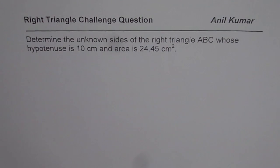Determine the unknown sides of the right triangle ABC whose hypotenuse is 10 cm and area is 24.45 cm². First of all, let me thank my subscriber for asking me the question. And the solution which I'm going to provide uses trigonometry. Let me know if that helps. I'll also give you a hint of how to do it without trigonometry also.